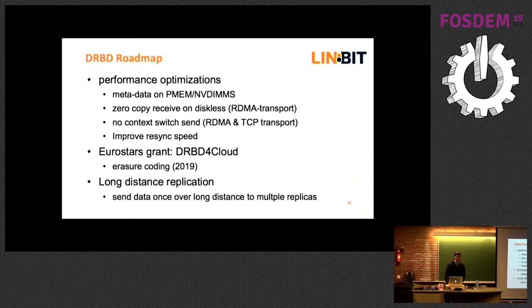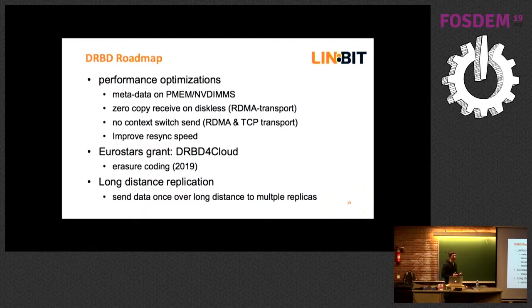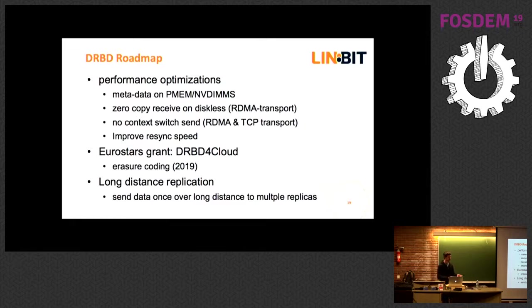Our further roadmap for DRBD itself is mostly focused on performance optimizations. Performance is one of the key arguments for DRBD — it is very fast because it only deals with block replication; it doesn't deal with any file system details, key-value stores, databases, or anything like that. It's just another block device layer, like a filter. We are also building an erasure coding layer into DRBD so you wouldn't need full replicas — you could spread data across multiple nodes with n-plus-one copies.